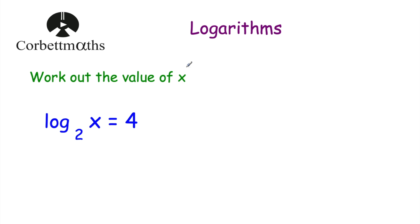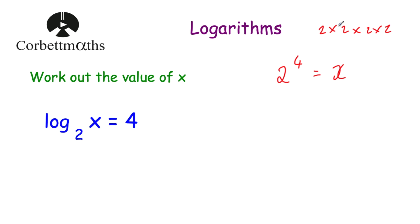Question 3: work out the value of x. We have log to base 2 of x is equal to 4. This time we need to find x, the answer. Writing in index form: 2 to the power 4 equals x. 2 times 2 times 2 times 2 — 2 times 2 is 4, times 2 is 8, times 2 is 16 — so x equals 16. Log to base 2 of 16 equals 4, confirmed since 2 to the power 4 is 16.